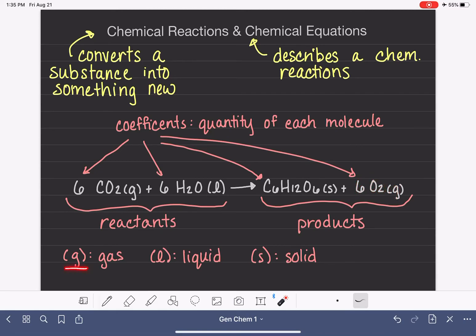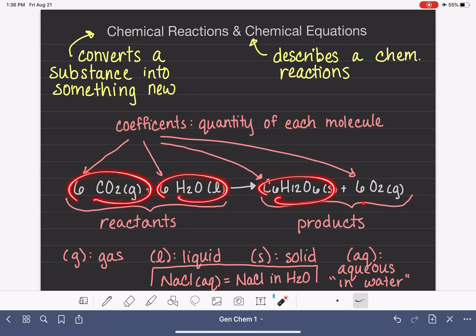There is a fourth state that you'll sometimes see written in chemical equations. It's not present in this particular one. And that fourth one is the symbol AQ, which stands for aqueous. Aqueous just means in water. So if you see the notation, like let's say it could be NaCl(aq), that just simply means that you have NaCl in water. And for whatever reason, one reason or another, water is not being listed in the chemical reaction as a reactant or as a product.